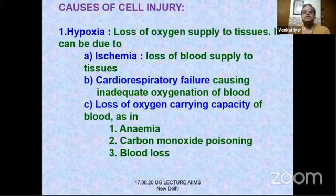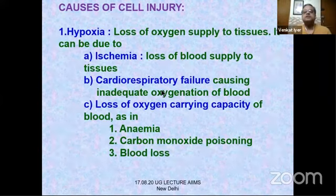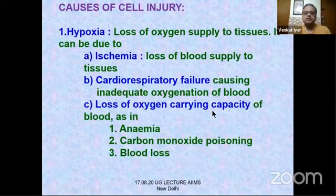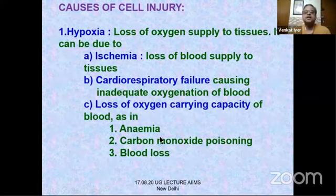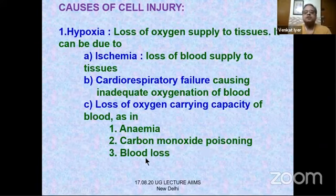Hypoxia means loss of oxygen supply to tissues. It can occur because of ischemia — loss of blood supply — or cardiorespiratory failure causing inadequate oxygenation of blood. For example, a myocardial infarction can reduce blood flow enough to cause cardiogenic shock, injuring sensitive organs like the kidney. Hypoxia can also result from loss of oxygen-carrying capacity, such as anemia, carbon monoxide poisoning (where CO binds instead of oxygen), or acute blood loss from a road traffic accident causing hypoxic shock.